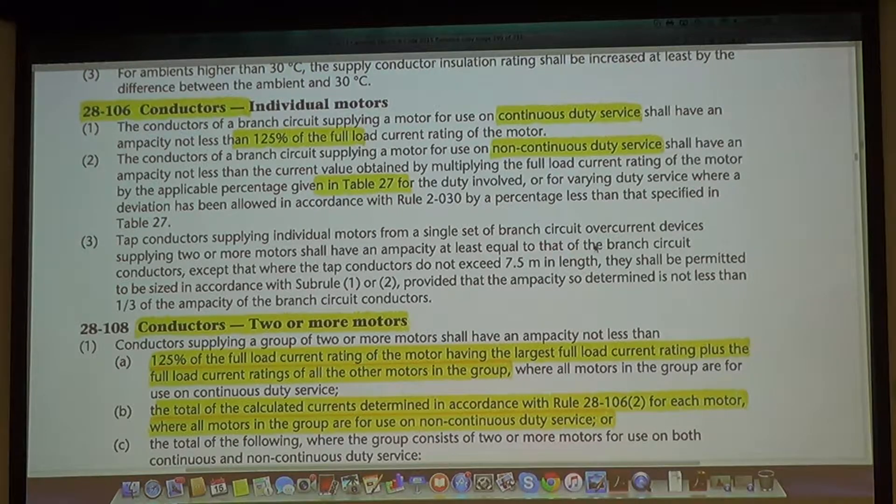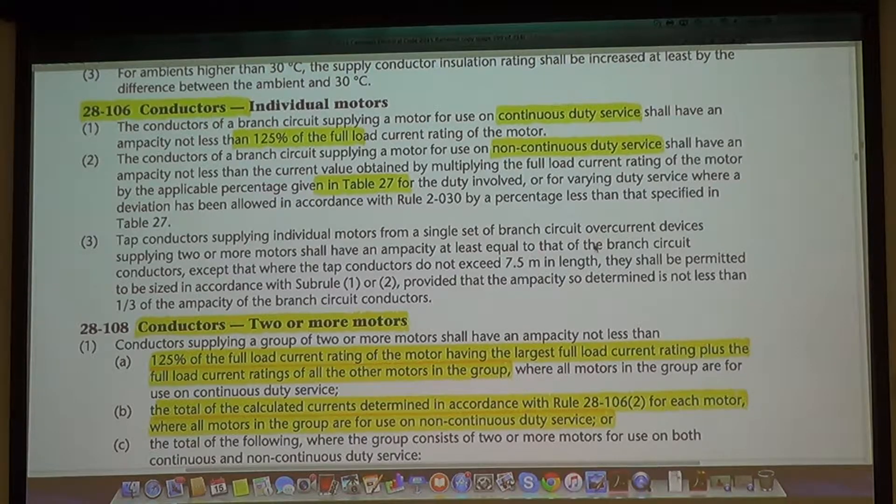For a non-continuous duty motor, what do I multiply it with? I go to table 27 to find the derating factor and multiply my FLA with the numbers on table 27.